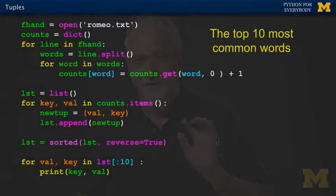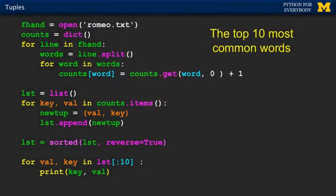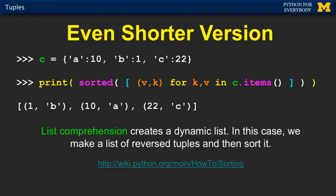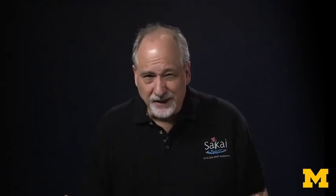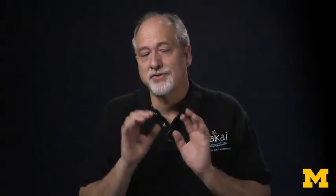But it's probably easier if you're beginning to use simpler primitives, and once you're more sophisticated to use these more powerful primitives. So that's a quick run through tuples. We talked about how they're pretty much like lists, you can't change them, you can compare them, they're sortable, and you can have two variables in an assignment statement. And we can now sort dictionaries by key and value by constructing a data structure — a list of flipped tuples — and then sorting that.